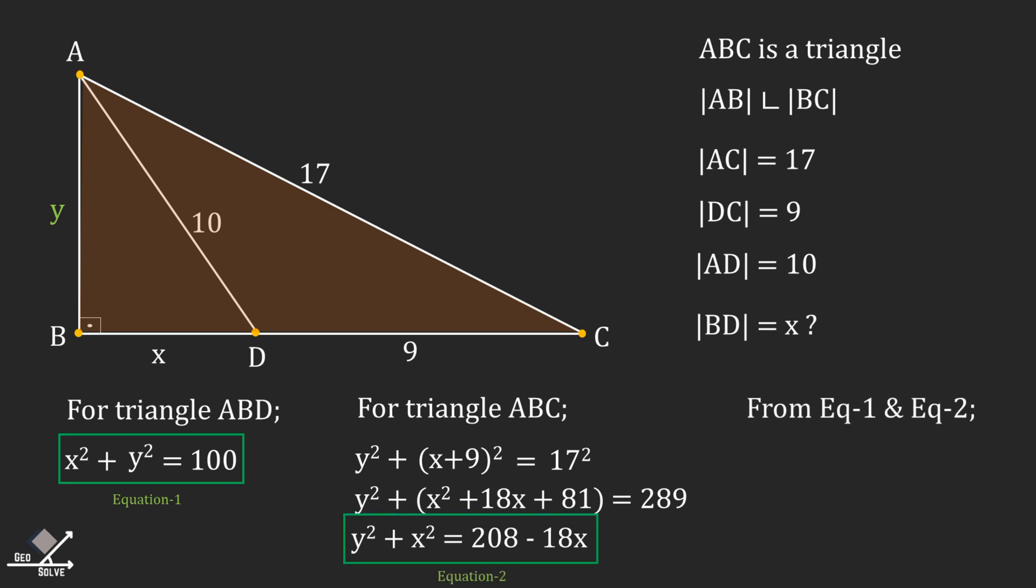Then from equation one and equation two, we can write 100 equals 208 minus 18x. Rearranging the terms, we have 18x equals 108. Dividing both sides by 18, we have x equals 6, and that is the answer.